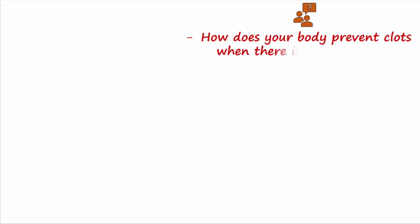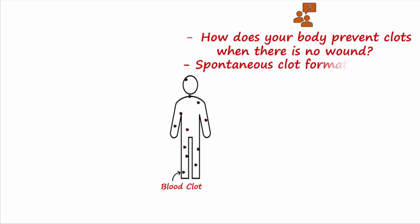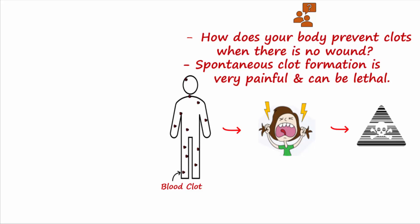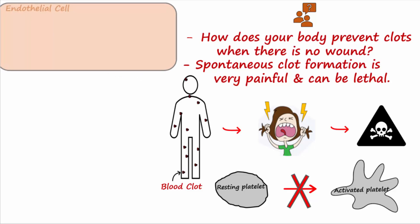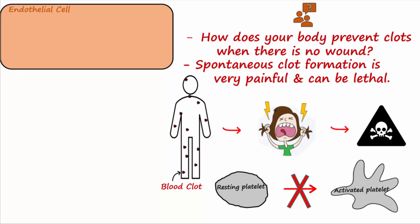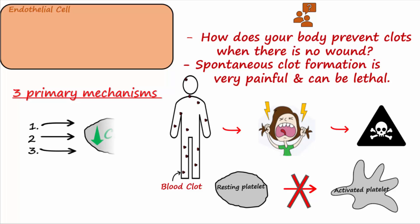But how does your body prevent clots when there is no wound? Doing so is important because spontaneous clot formation is very painful and can be lethal. Clot formation is primarily prevented by an active inhibition of platelets, and the most important cell type to inhibit platelet activation are endothelial cells. Healthy intact endothelial cells block spontaneous platelet activation using three primary mechanisms, all of which share a common goal: reduce calcium levels within the platelet. When intracellular calcium levels are kept low, platelets are maintained in an inactive state and don't stick to one another.